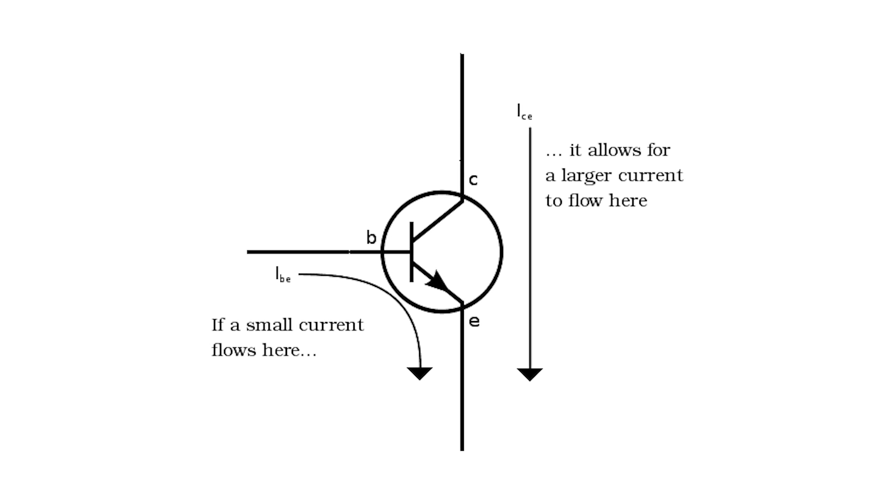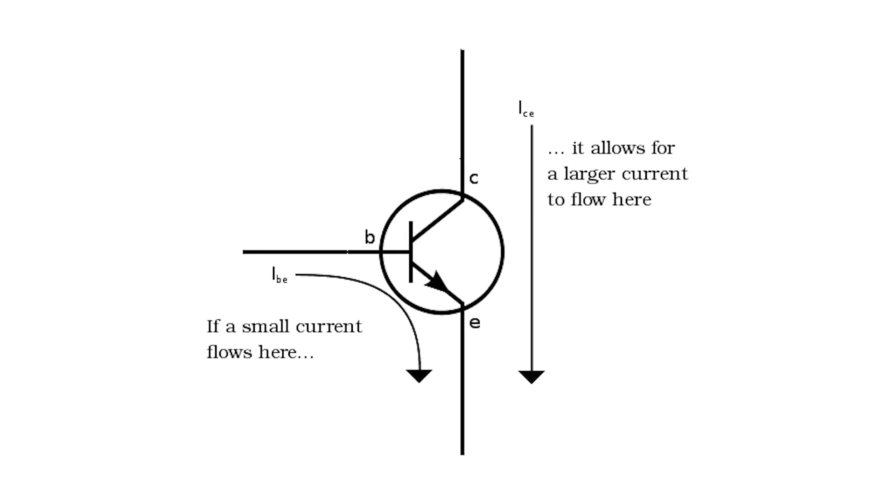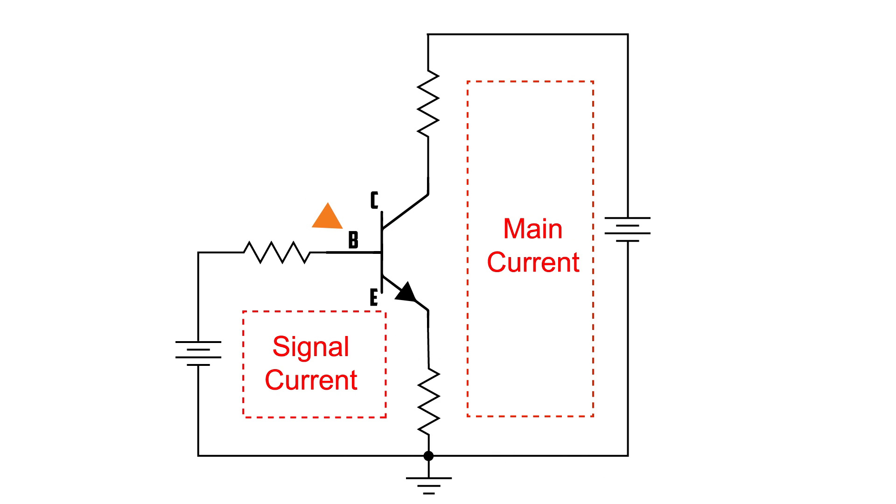So how do transistors work? Rather than using a physical mechanical switch, a transistor can act as an electronic switch, using signals to turn it on and off. The main current in your circuit would flow through the collector and emitter, while a signal current flows from the base to the collector. The signal current at the base is what controls our switch. A current flowing from the base to the emitter can open the flow of current from the collector to the emitter.